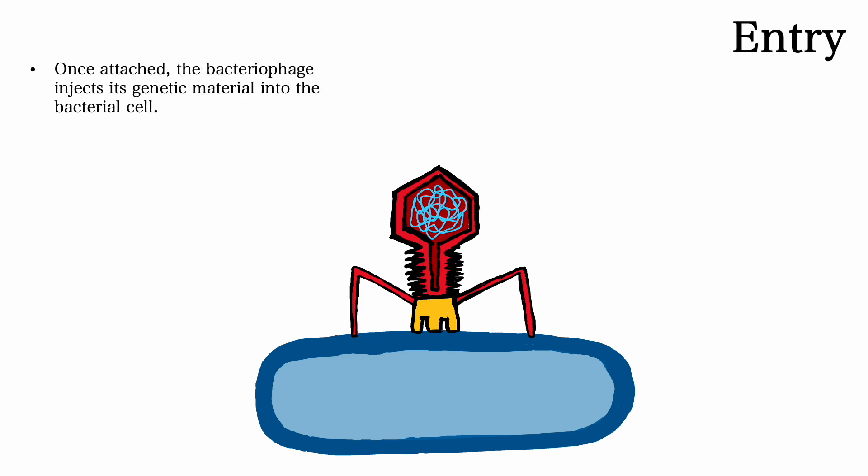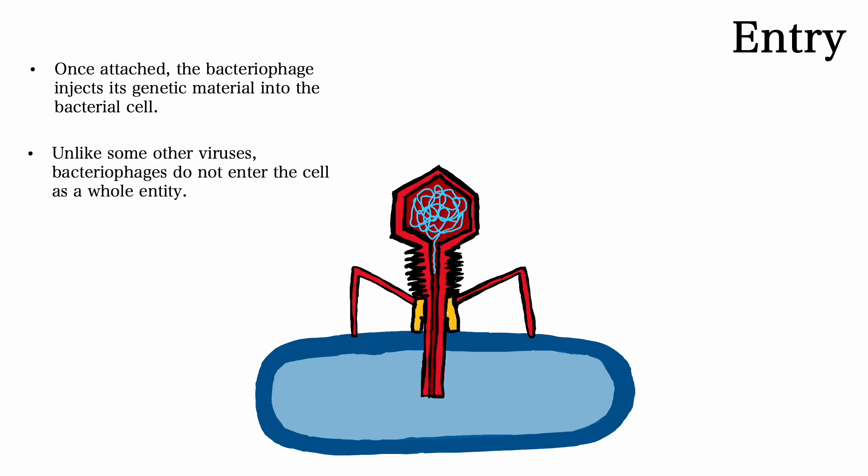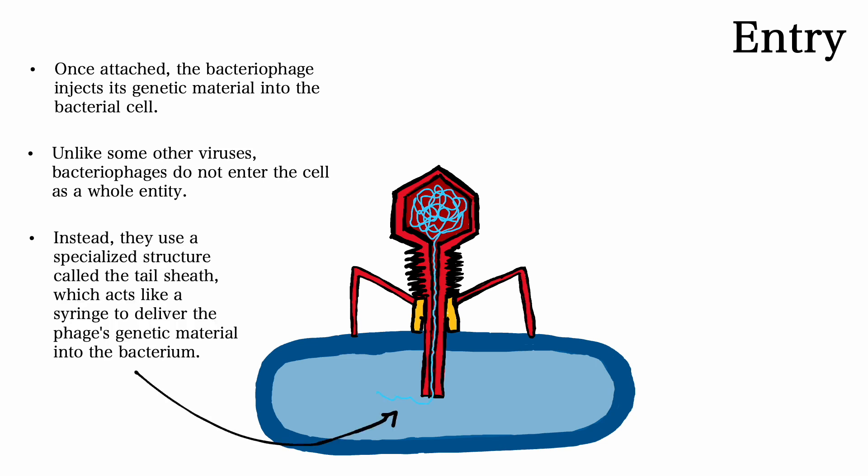After attachment, the bacteriophage proceeds to enter the bacterial cell. Once attached, the bacteriophage injects its genetic material into the bacterial cell. Unlike some other viruses, bacteriophages do not enter the cell as a whole entity. Instead, they use their specialized structures called the tail sheath, which acts like a syringe to deliver the phage's genetic material into the bacterium.